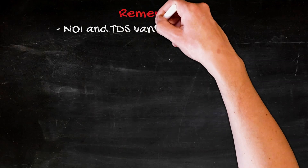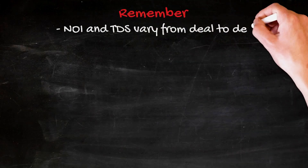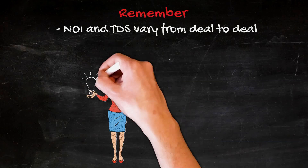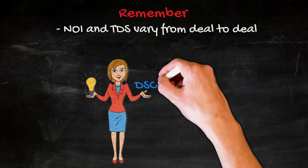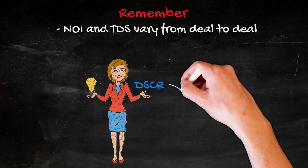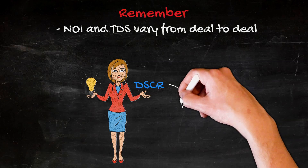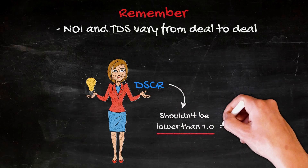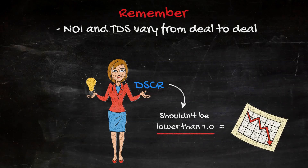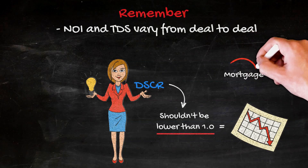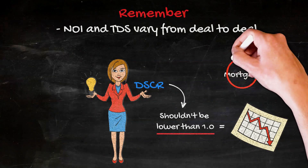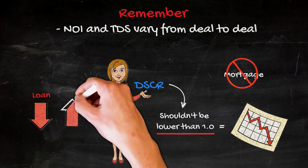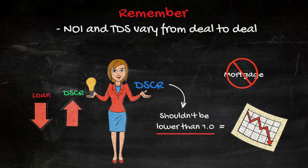The actual numbers for the NOI and the TDS will vary from deal to deal, but what's important is that you understand how to use them in calculating the DSCR. Also important is the fact that you really never want your DSCR to be lower than 1.0. If it is, it means that the property is going to be cash flow negative, and also that you will not be able to get a bank mortgage on it unless you reduce the loan amount to the point where the DSCR increases to the bank's preferred minimum threshold.